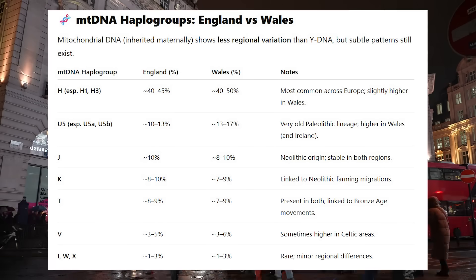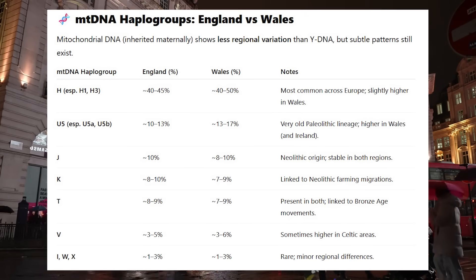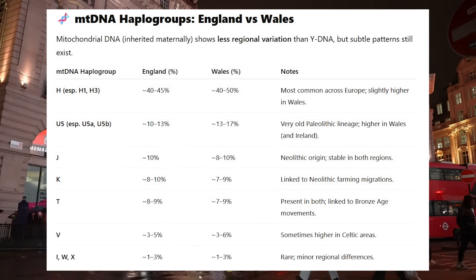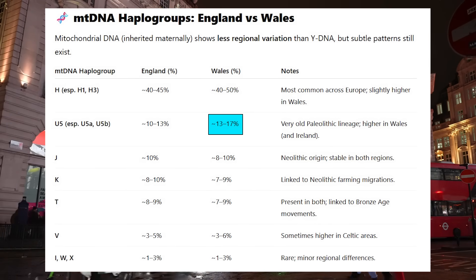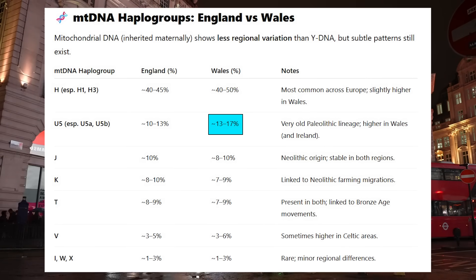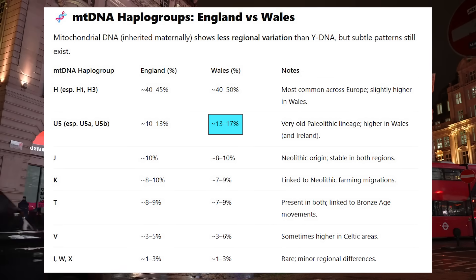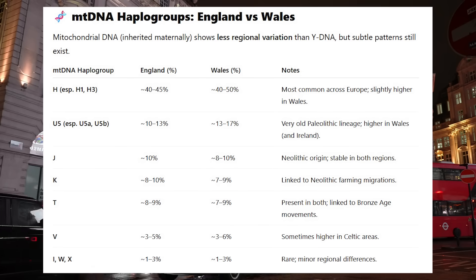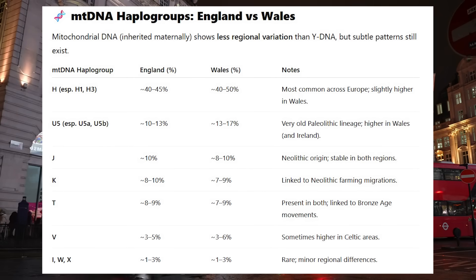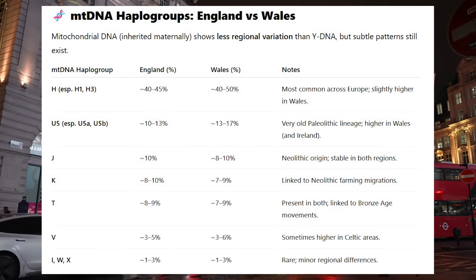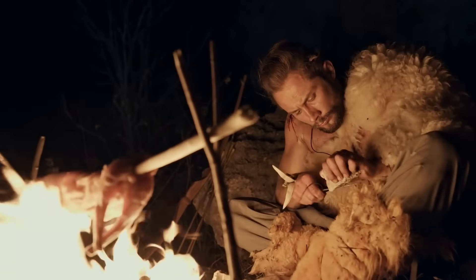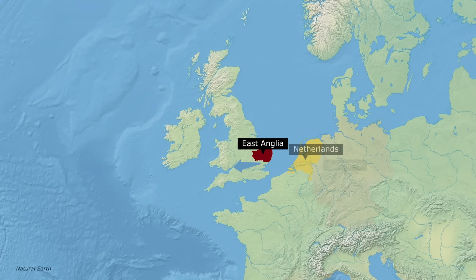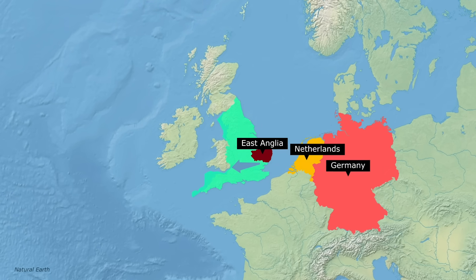On the maternal side, the mitochondrial haplogroups in both countries are more similar, yet we do see subtle differences. Wales has slightly higher levels of U5, for example, than England. This is a very old haplogroup in Europe that was the most common maternal marker in Western hunter-gatherers — the first people to walk these lands after the ice melted. This again reflects the overall pattern that Wales shares more genetic affinity with some of the earliest peoples who moved into this region, where many people in England have more affinity with the likes of the Dutch or the Germans.